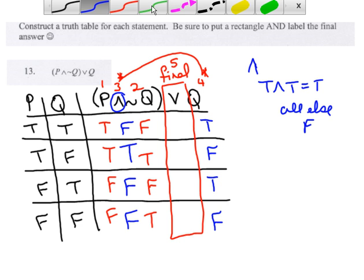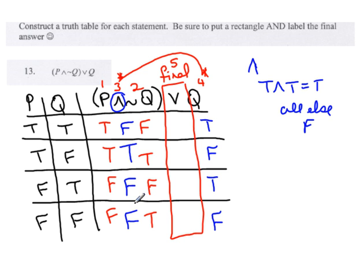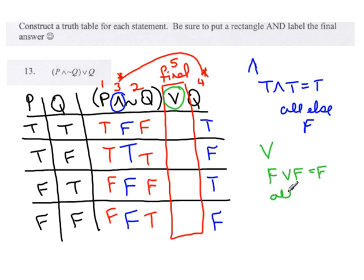Now I'm going to look at the two columns — the last thing I did on the left of the final and the last thing on the right side — and compare them to get the final. The disjunction rule: false or false is false, all else is true. In row four I have false or false, so that's false. There are no other false-or-falses, so the other rows are true.